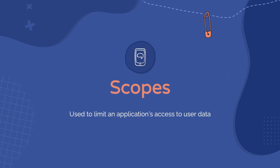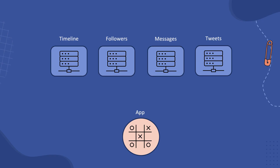Let's dig a bit more into OAuth scopes. OAuth scopes are used to limit an application's access to user data. During the authorization request, the API provider will display all the requested scopes to the user so they understand exactly what access rights they are providing. As an API developer, let's say you provide a few simple scopes: read, write, and a combo read-write. At the time of releasing your API, you might feel like these scopes are more than enough. But oftentimes having such a small number of scopes can bite you in the back.